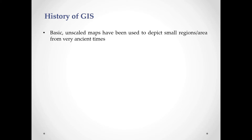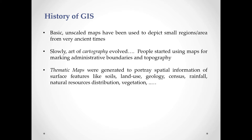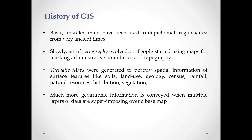Basic unskilled maps have been used to depict small regions or areas from very ancient times. Slowly, out of cartography, people started using maps for marking administrative boundaries and topography. Thematic maps were generated to portray special information of all surface features like soils, land use, geology, census, rainfall, natural resources distribution, base stations, and much more.